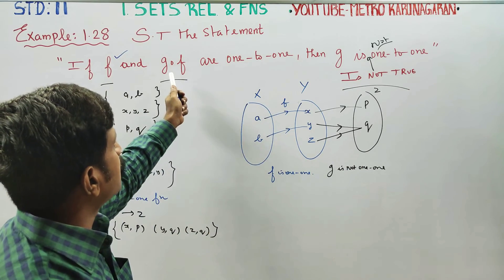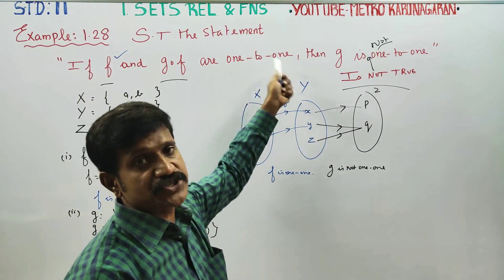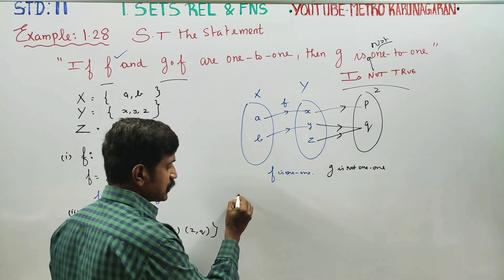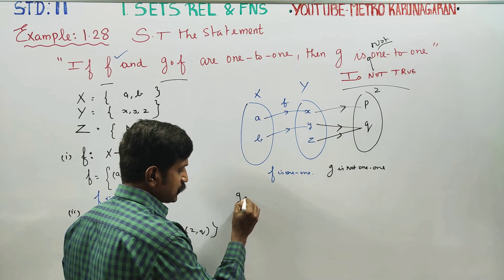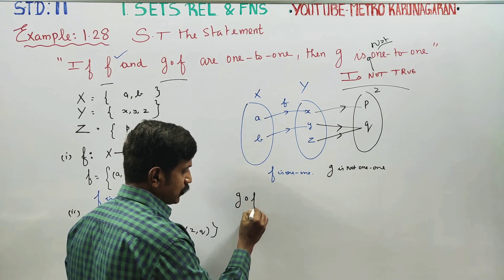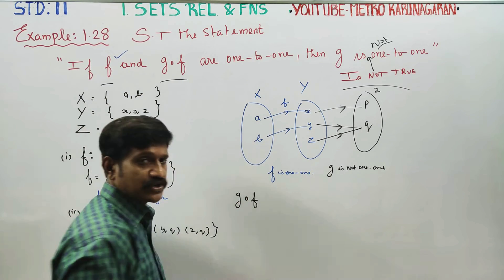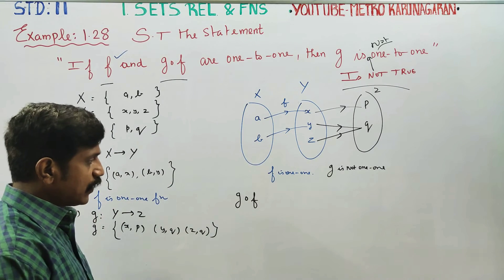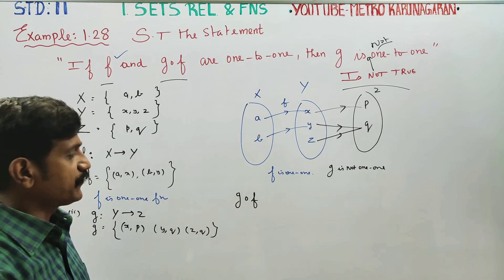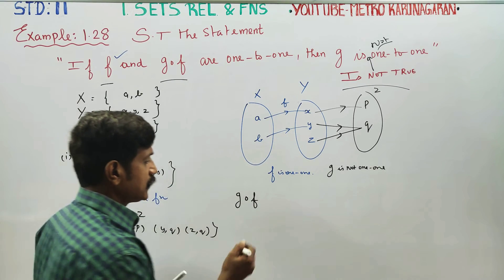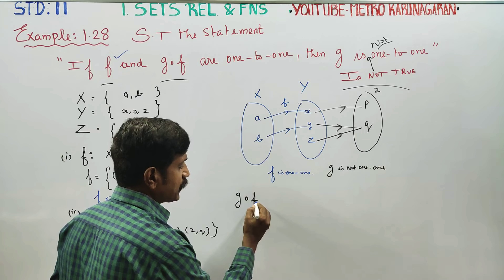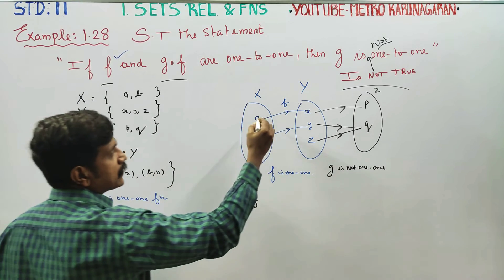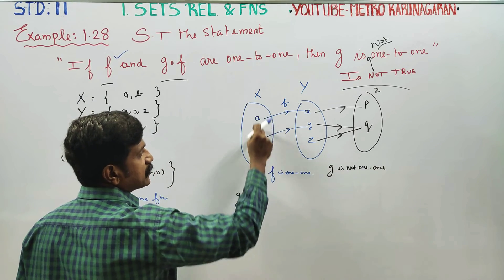Now let us prove that g∘f is a 1-to-1 function. g∘f is indeed a 1-to-1 function. To find g∘f, note that g∘f is not just f — we apply f first, then g.